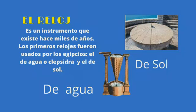Hablemos brevemente sobre la historia del reloj. Es un instrumento que existe hace miles de años. Los primeros relojes fueron usados por los egipcios: el de agua o clepsidra y el de sol.